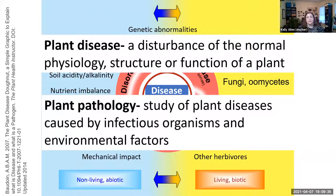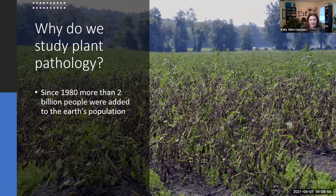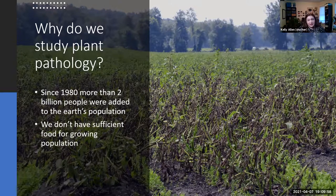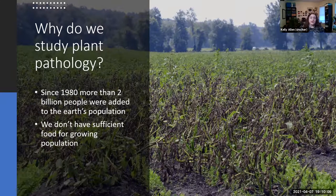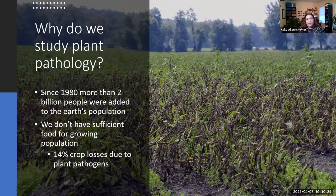As plant pathologists, we are typically mostly focusing on infectious organisms. So why do we actually study plant pathology and why is it such an important thing? As we have this growing population — since 1980, more than 2 billion people have been added — we are having a really hard time feeding our growing population, and we know we're only going to continue to have more population growth. An estimated 14% of total crop losses are due specifically to plant pathogens.